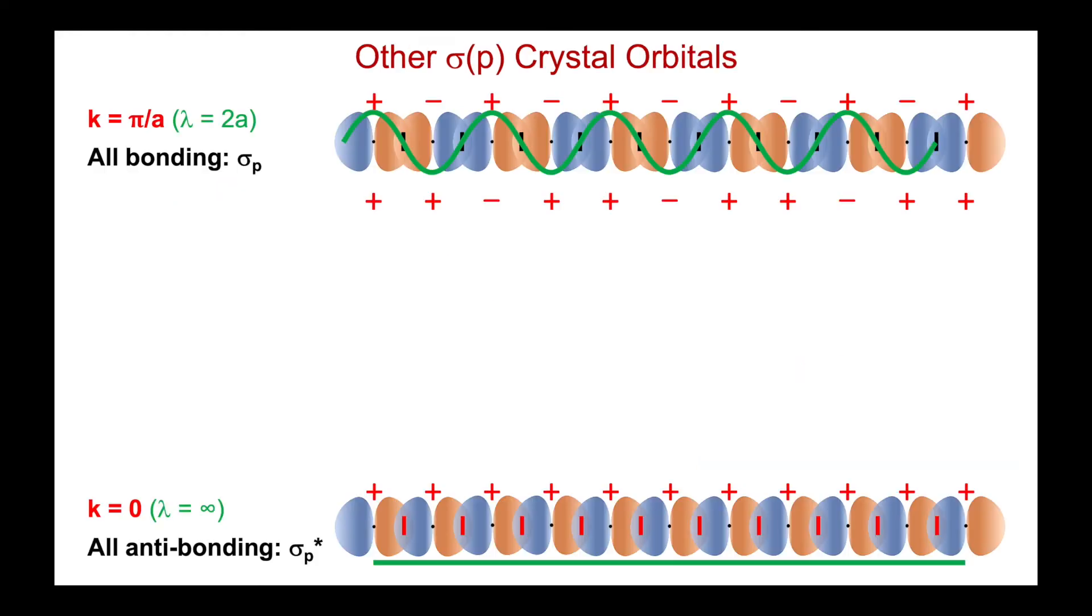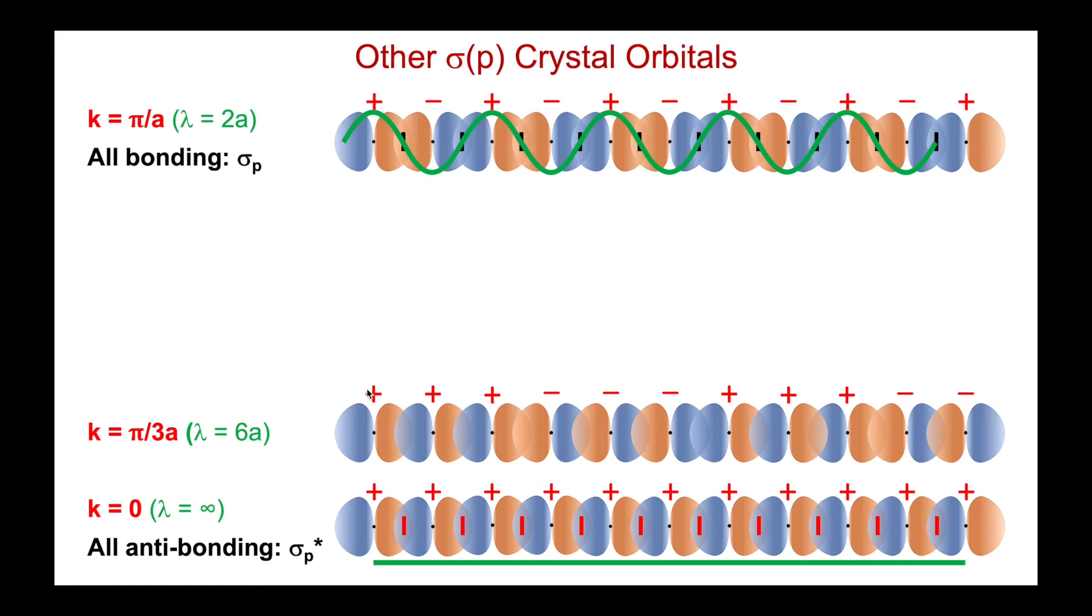Let's take a look at a few more of the crystal orbitals. k is pi over a, alternating signs in the coefficients, but all bonding because of the symmetry of the px orbital. k is zero, all atomic orbitals added, but it results in everything being out of phase. Here's k is one third pi over a, lambda 6a. Here is the node in the crystal orbital. But now a node yields in phase bonding overlap. Where there is no node, we have anti-phase overlap. And it's the bonding that coincides with the node in the wave function.